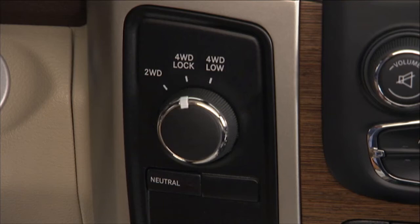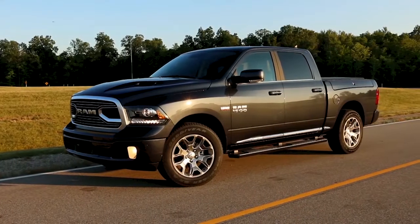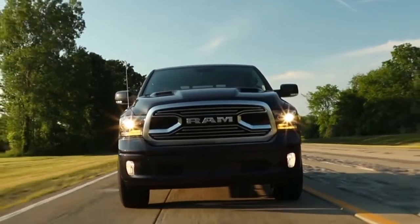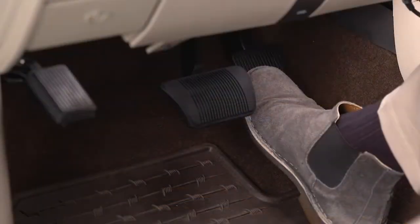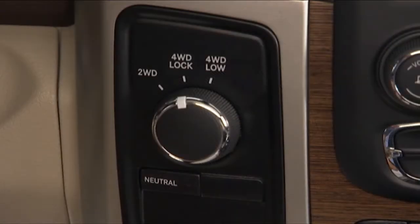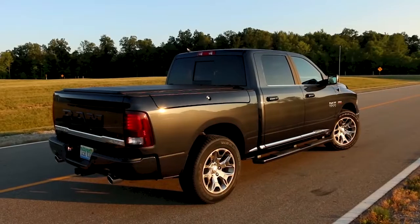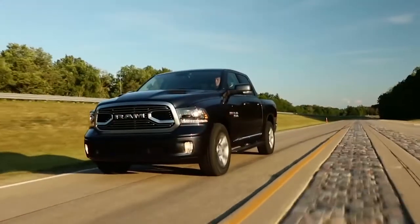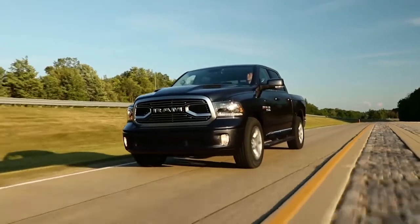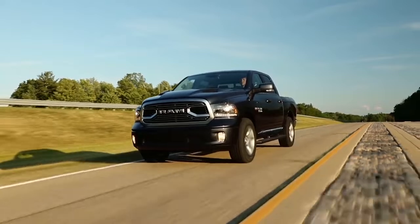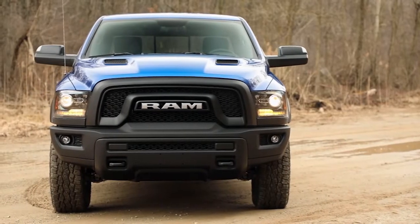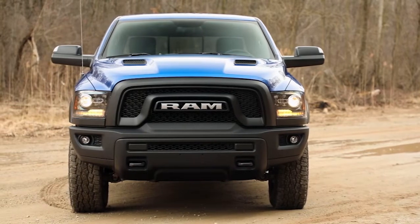To shift from two-wheel drive to four-wheel drive, use the four-wheel drive control to select the desired position. You can shift between two-wheel drive and four-wheel drive lock whether you're stopped or driving. However, if you shift while driving, the transfer case will engage or disengage faster if you momentarily release the accelerator pedal after using the control switch. When stopped, you can't shift unless the ignition is in the on/run position — the engine can be running or off. You can't perform this shift with the ignition in the ACC or accessories position. Keep in mind the vehicle won't shift between two-wheel drive and four-wheel drive lock if the front or rear wheels are spinning; the wheels must have traction to perform this shift.